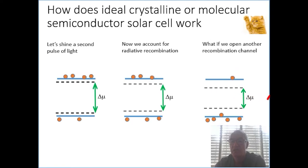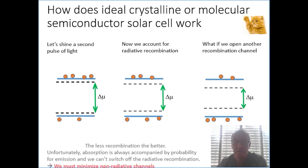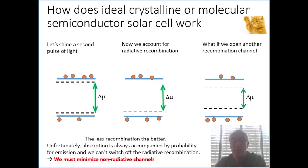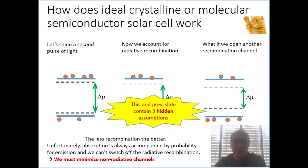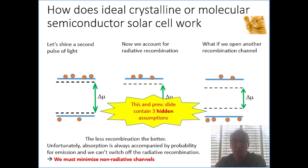And what we can see is that if we have more recombination, then of course we will have fewer charges in the system and we will lose more in the electrochemical potential. This simple illustration shows us that we really want to have as little as possible in terms of extrinsic recombination channels. So we should really turn off all the non-radiative channels.